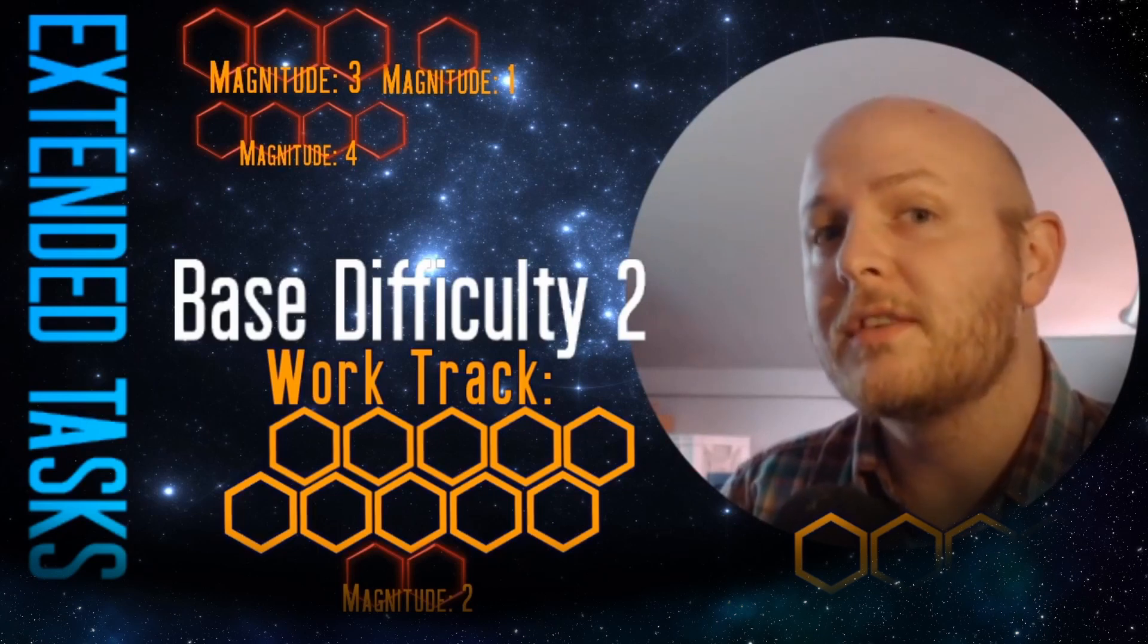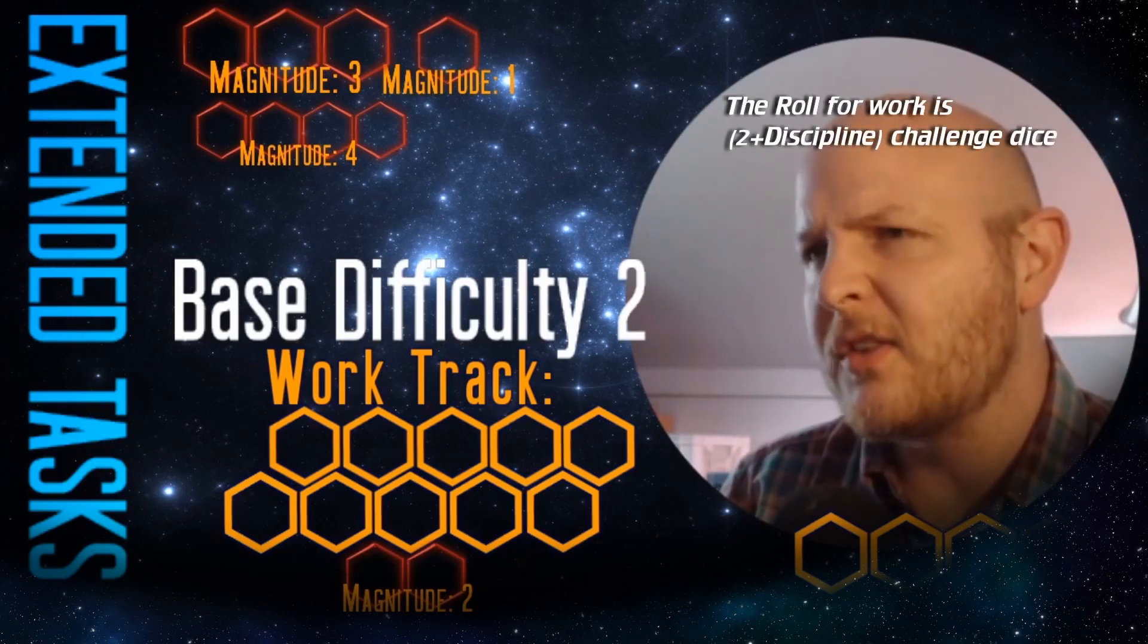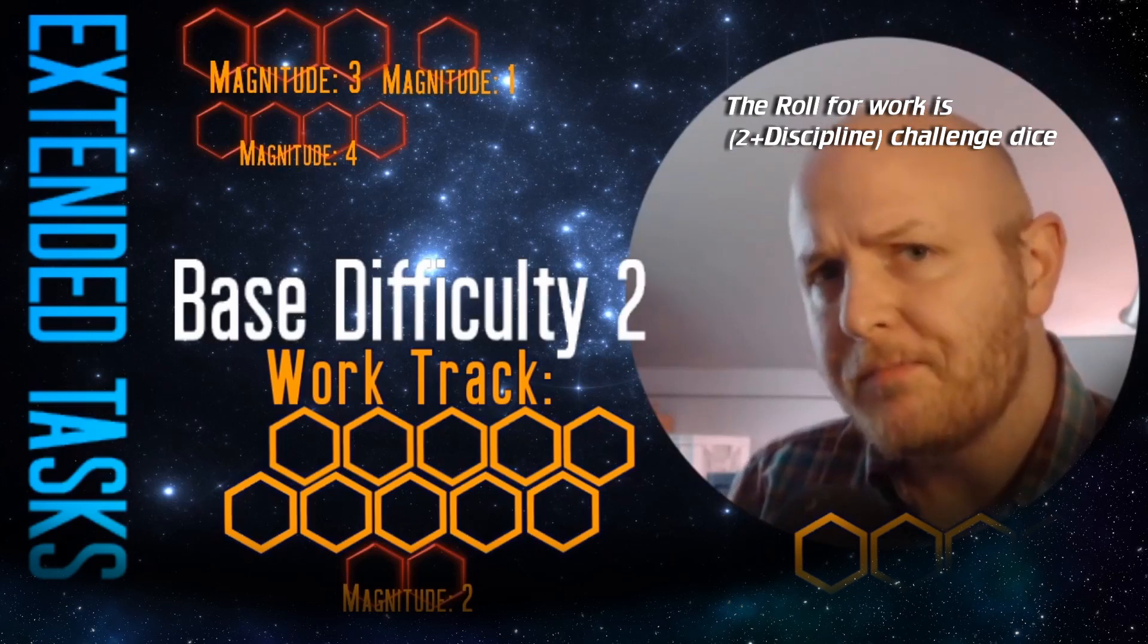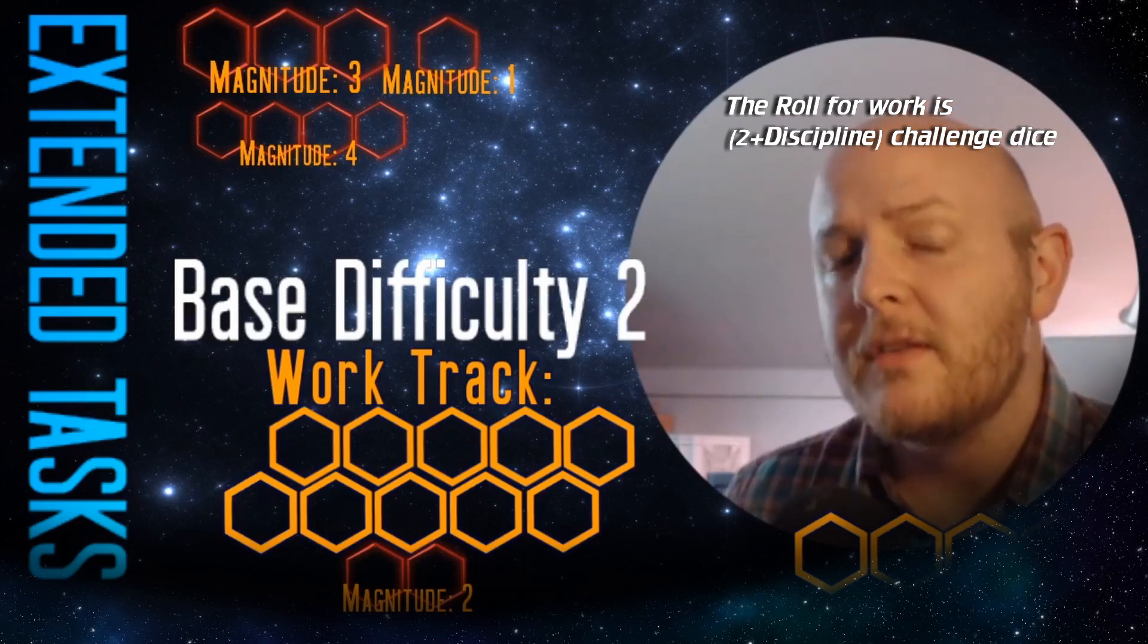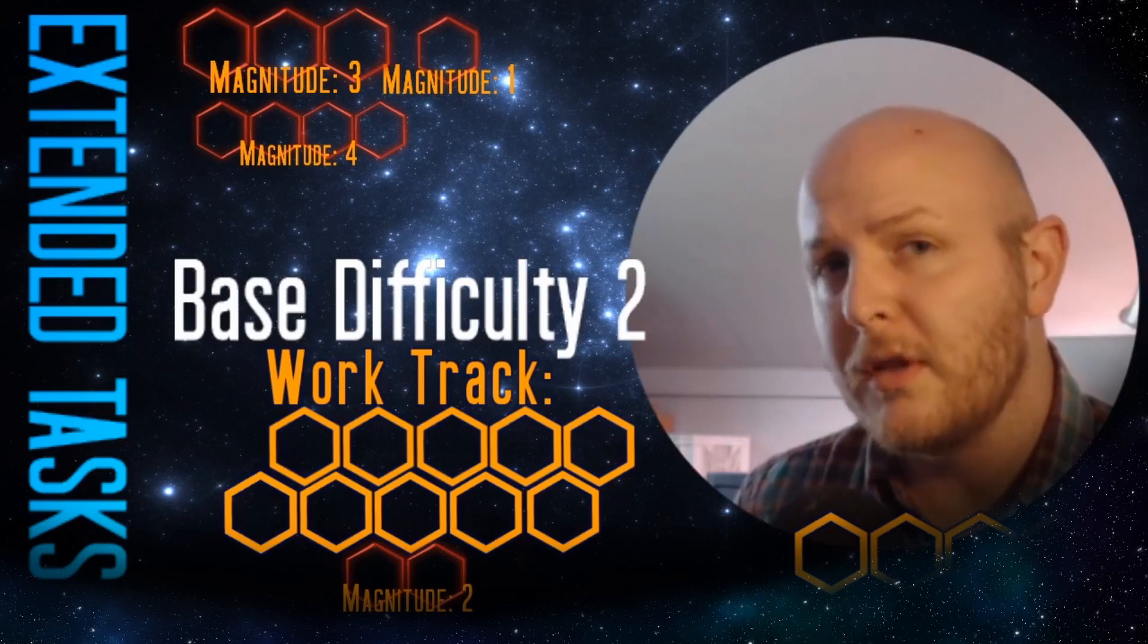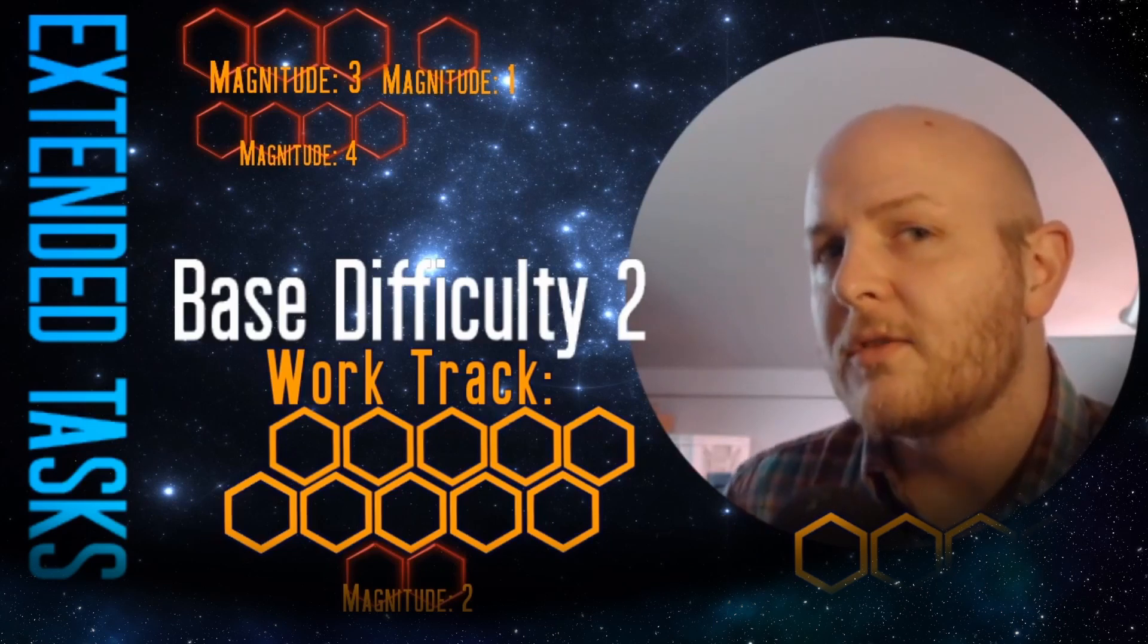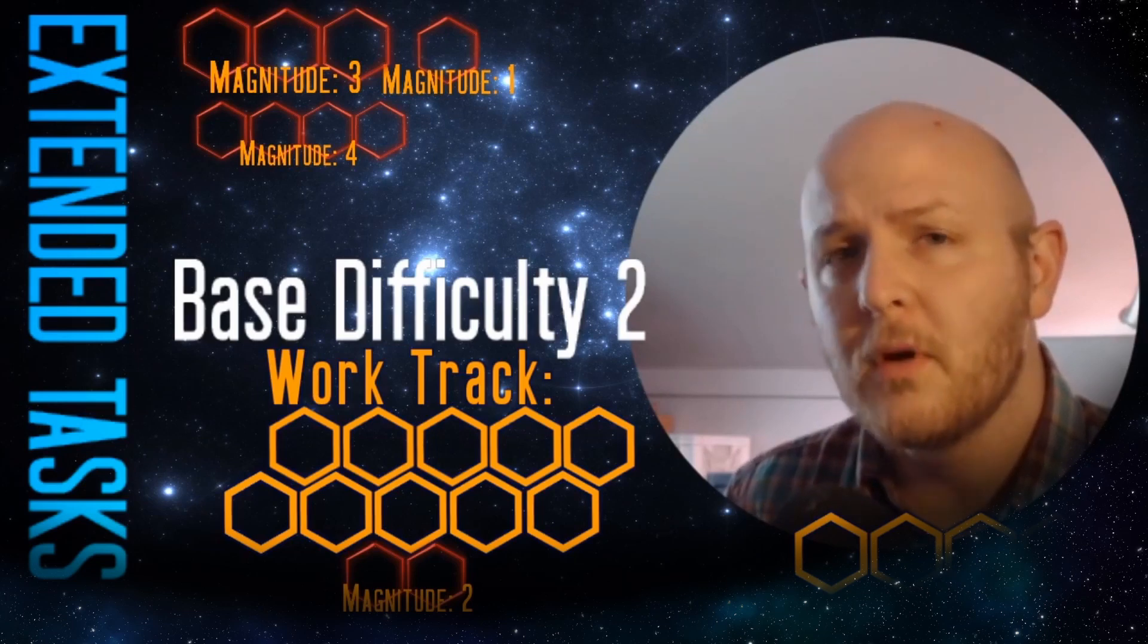Say that this chief engineer then succeeds. He picks up two plus his discipline score in challenge dice and rolls for progress on the work track. Say he has a discipline of engineering of four - six challenge dice. The expectation is that you'll probably roll about a five. There's a non-repeatable spend that you can only do once on work tracks - you can pick up some of those challenge dice, take your good rolls, and reroll the zeros. It's very easy to get to at least five.